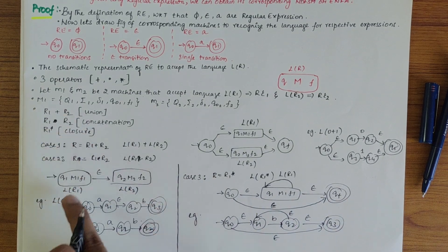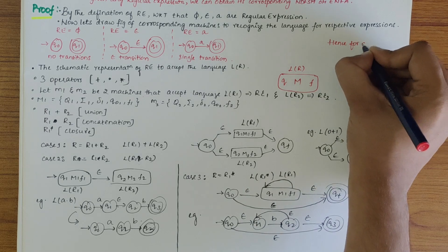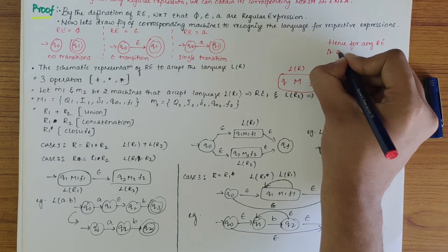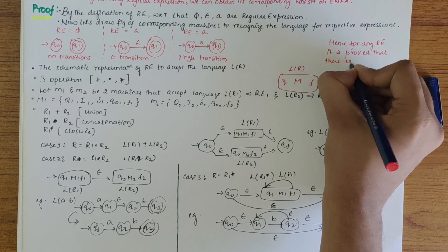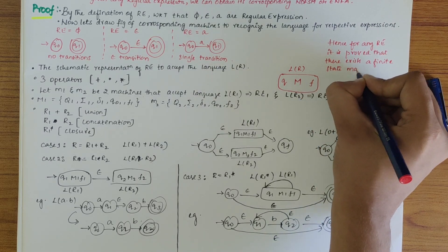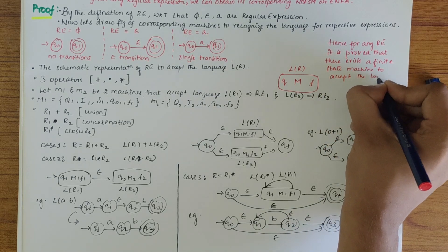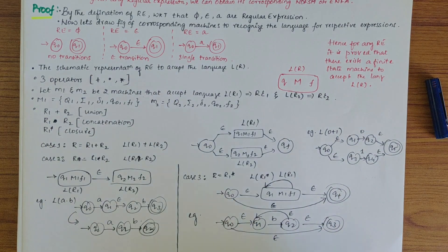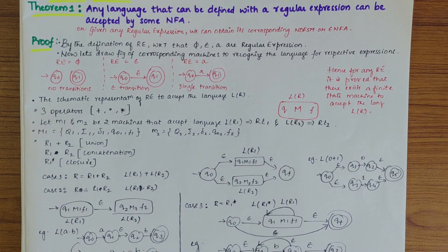We have looked into all three cases. Hence, for any regular expression, it is proved that there exists a finite state machine to accept the language L(R). Hence proved. I hope you have understood all the steps of these derivations. If you have any doubts, do let me know and subscribe to my channel. Thank you.